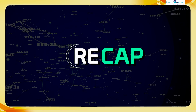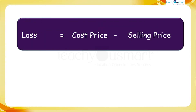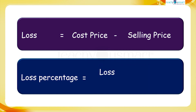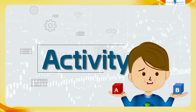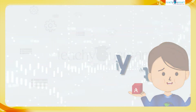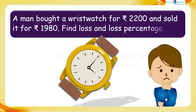Let's have a quick recap. Today we discussed the topics of loss and loss percentage. Before winding up, let's see how much you understood today's topic by doing an activity. A man bought a wristwatch for rupees 2200 and sold it for rupees 1980. Find the loss and loss percentage.